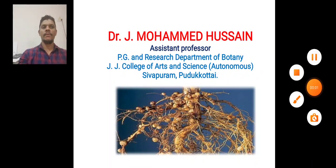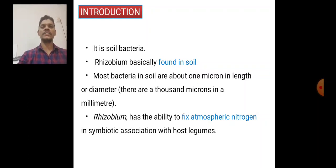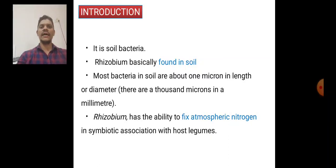Welcome to this video discussing Rhizobium — an introduction to Rhizobium. It is a soil bacteria. Rhizobium is basically found in the soil. Most bacteria in soil are about one micron in length and diameter, and there are thousands of microns in a millimeter. Rhizobium has the ability to fix atmospheric nitrogen in symbiotic association with host legumes.